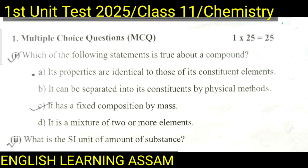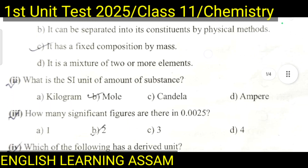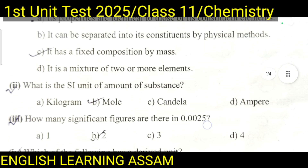Question number one, multiple choice question, one into twenty-five equals one. Which of the following statements is true about a compound? A. Its properties are identical to those of its constituent elements. B. It can be separated into its constituents by physical methods. C. It has a fixed composition by mass. D. It is a mixture of two or more elements. The correct answer is C.